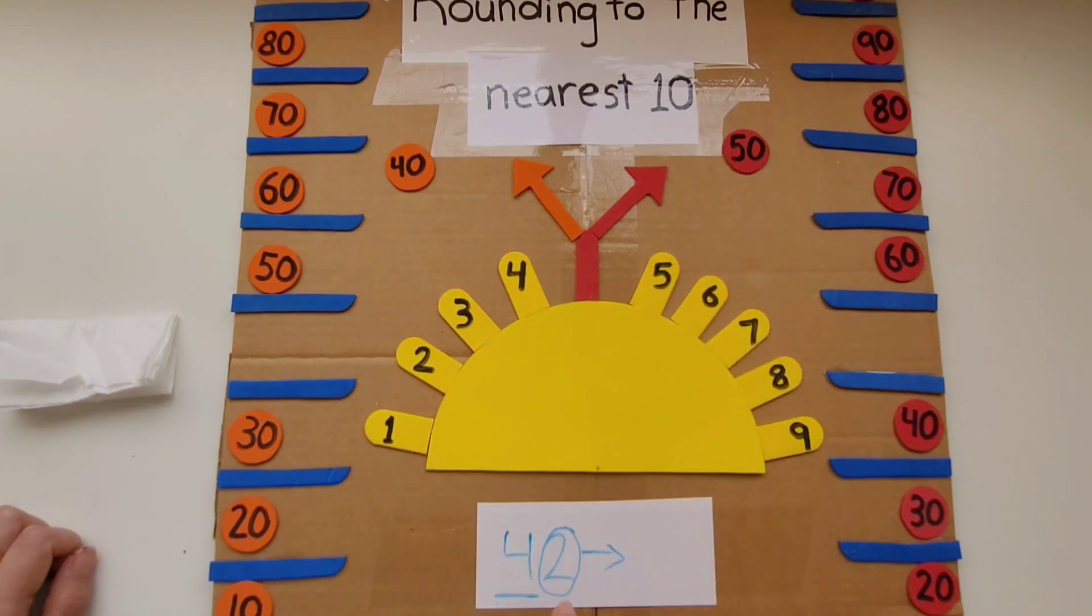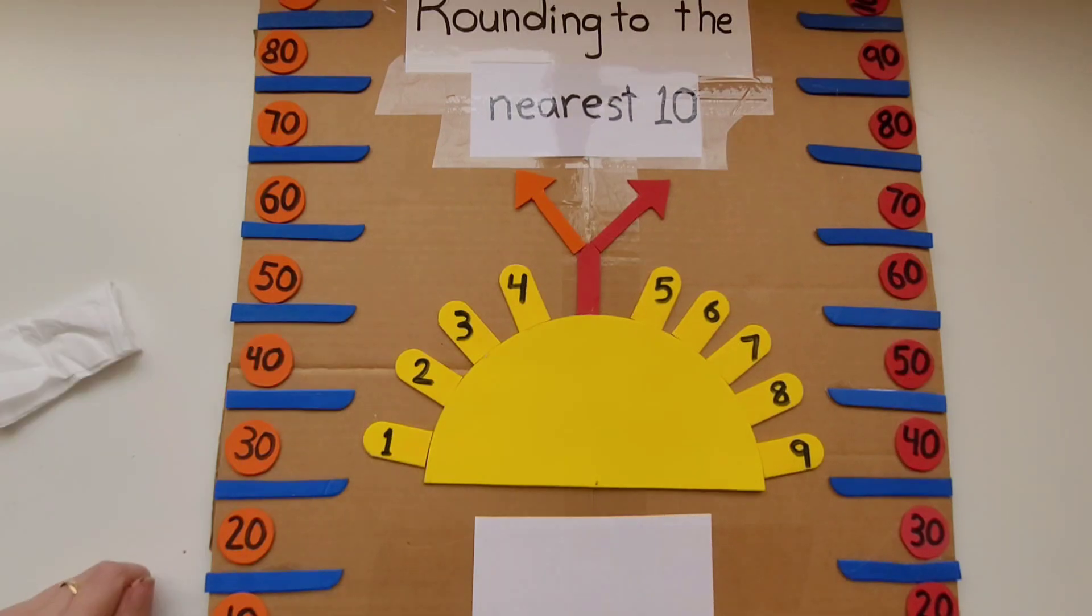Then we're going to circle the ones. We have a 2. One, two. It's on the left side of the board. That means we're going to round down. Our answer is 40. 42 rounds down to 40.